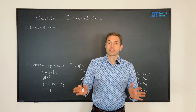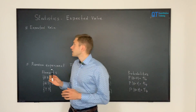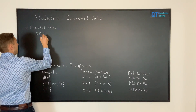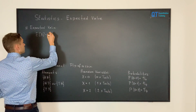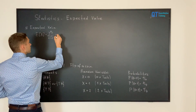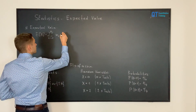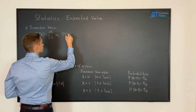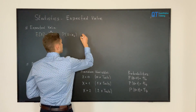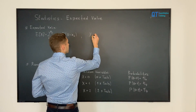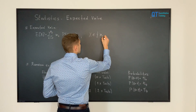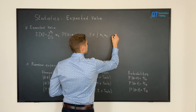In order to get started, we will first write down the formal definition of the expected value. The expected value of some random variable x is the sum going from k equals zero to some n of values x sub k multiplied by the probability that random variable x equals x sub k, where the random variable belongs to the set of values x1, x2, up to xn.